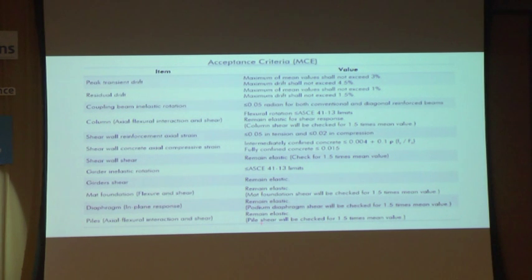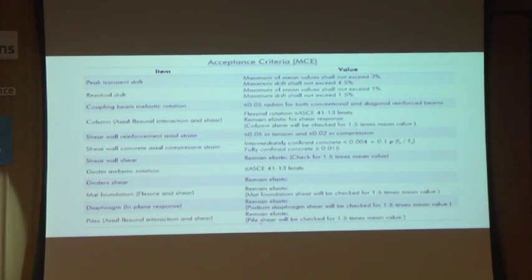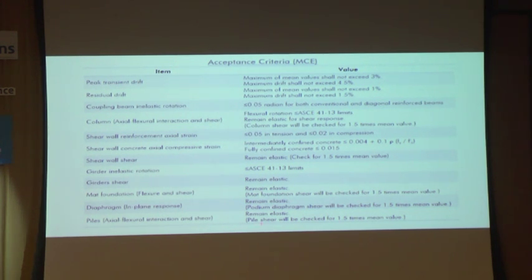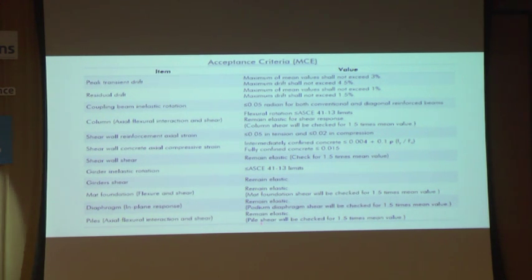To check residual drift, when we run the time history analysis, for example if a ground motion is 25 seconds duration, we should not stop the analysis at exactly 25 seconds, because the ground shaking stops but the building may still oscillate. So we should analyze at least one natural period — 10 or 15 seconds more — after the ground motion stops, so we can capture the oscillation of the building in a more realistic manner. If we stop suddenly, the analysis of the residual drift may be very large when actually the building would come back.